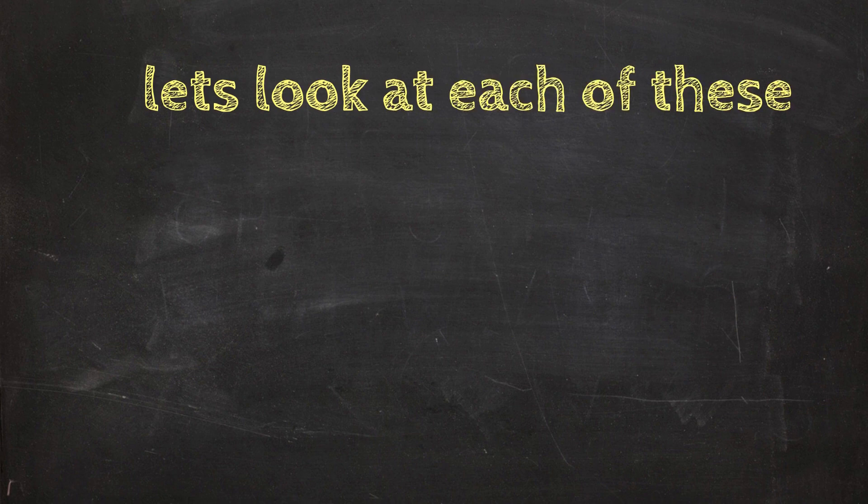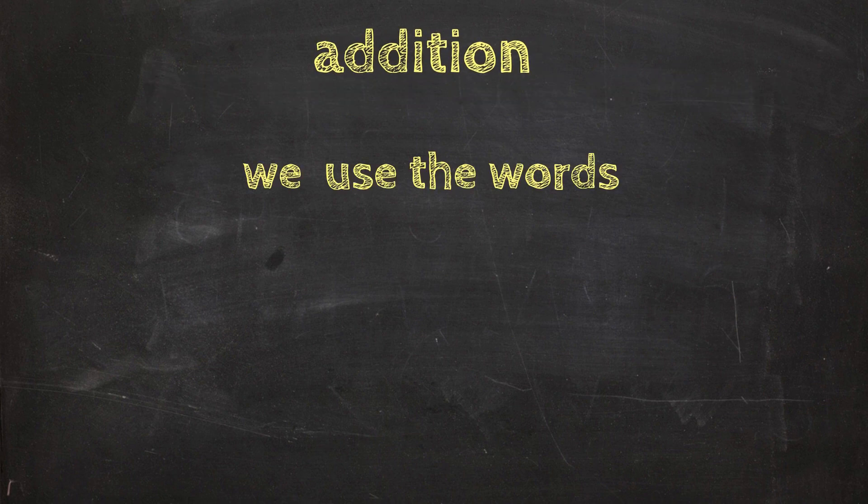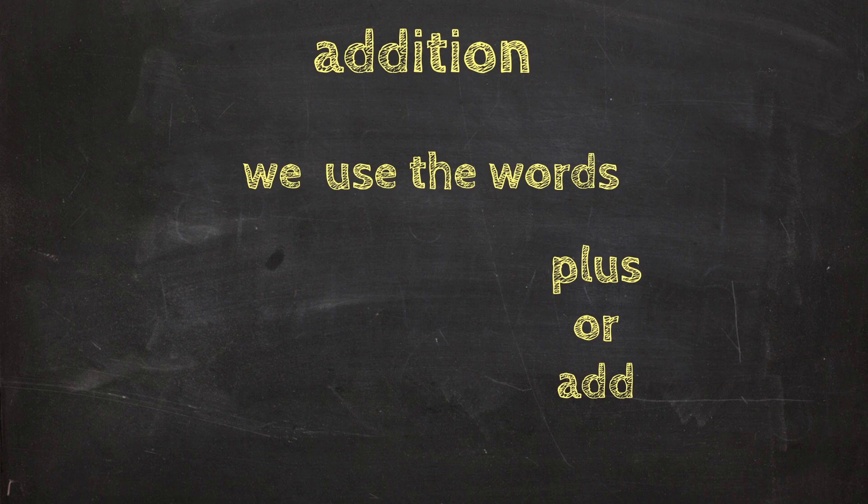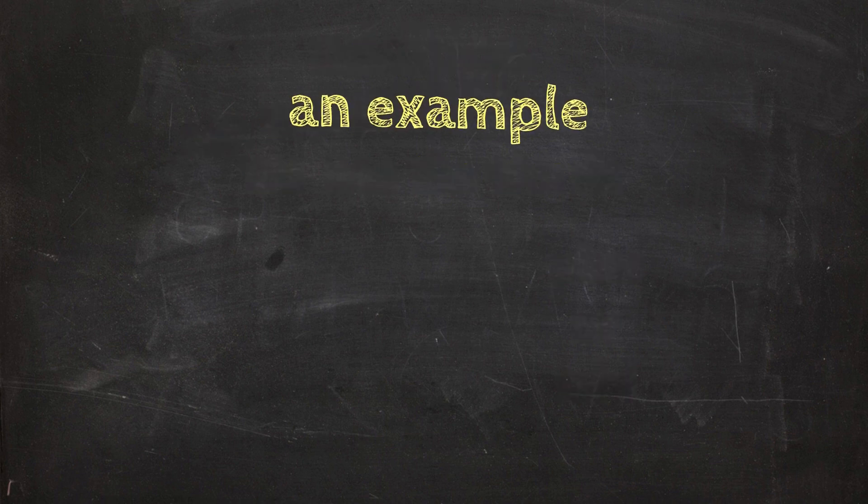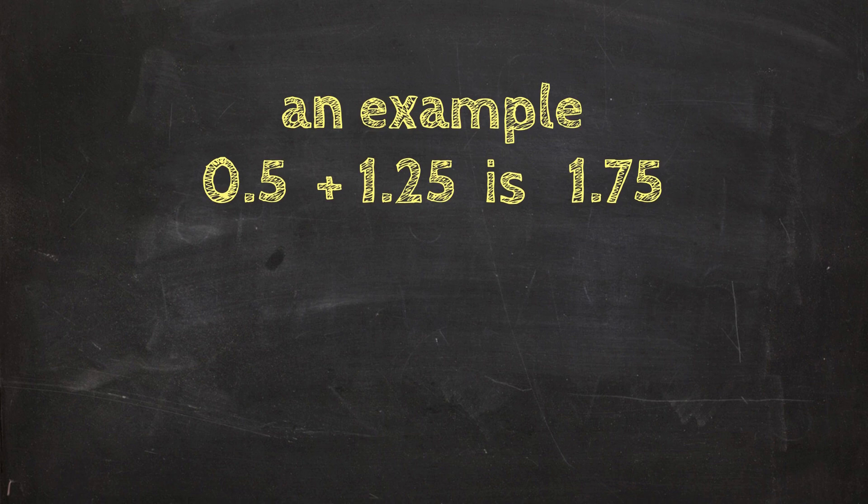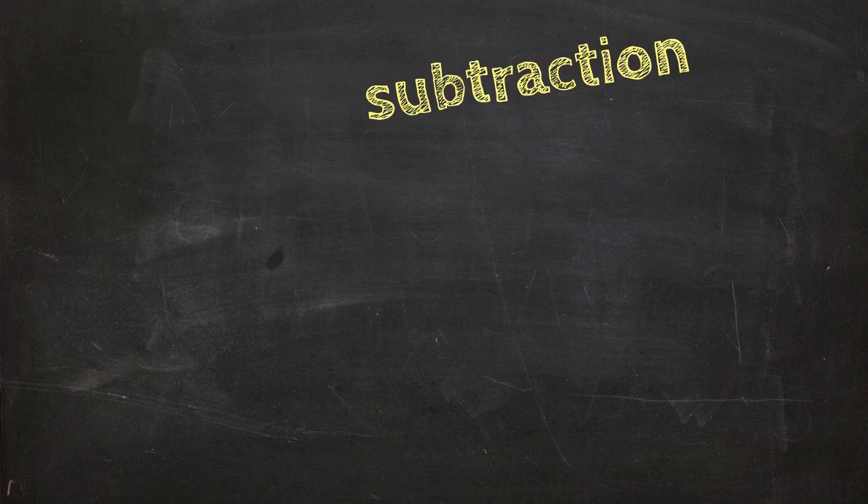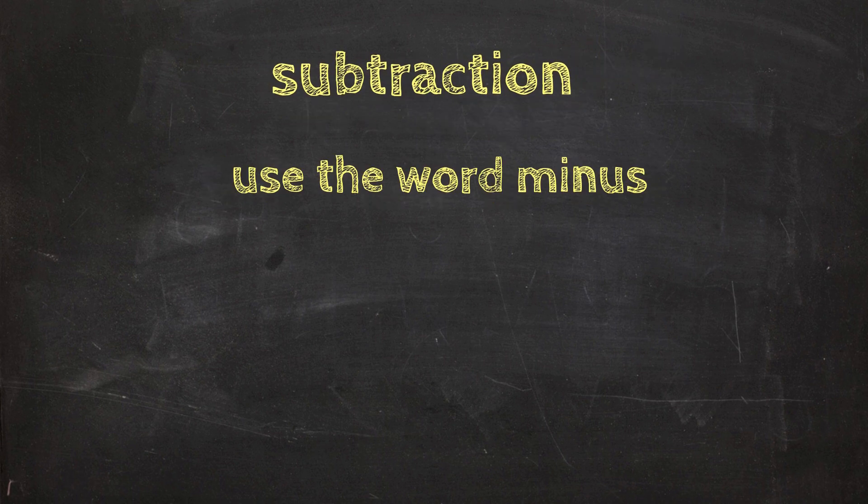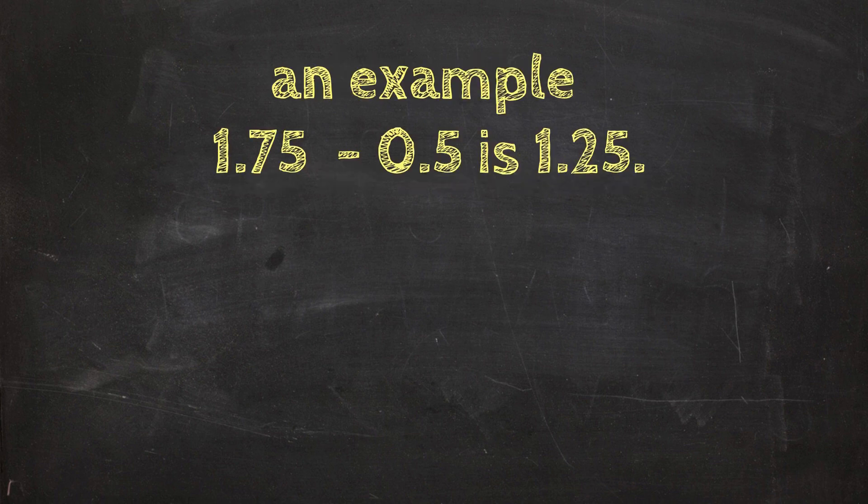So let's look at each of these. In addition we use the words plus or add. An example: 0.5 or 0.5 plus 1.25 is 1.75. In subtraction we use the word minus. An example: 1.75 minus 0.5 or 0.5 is 1.25.